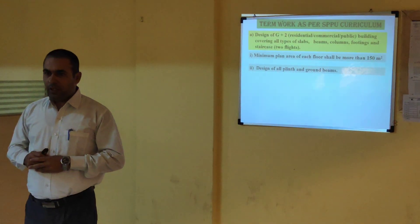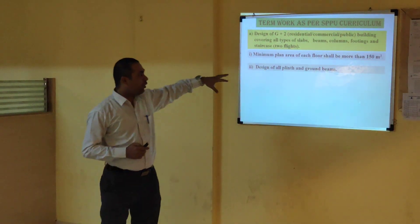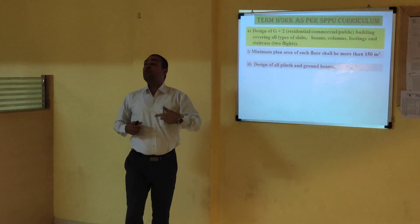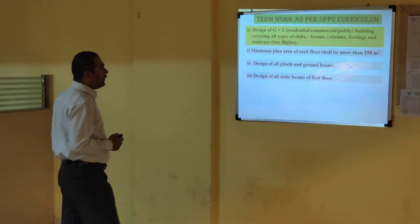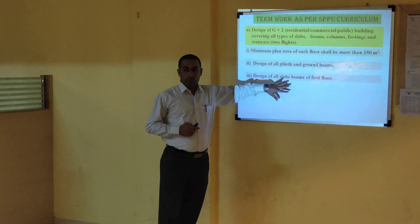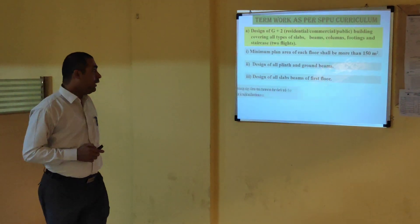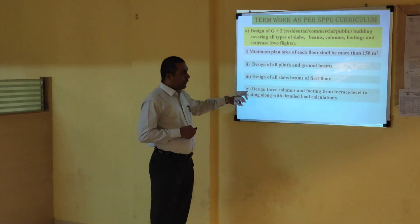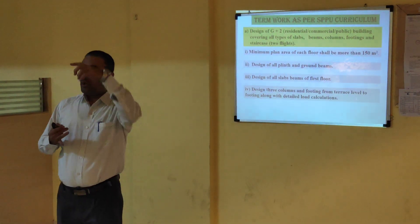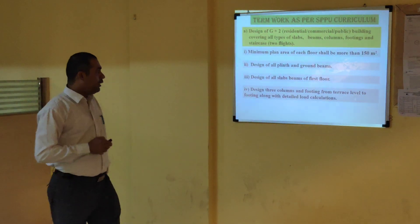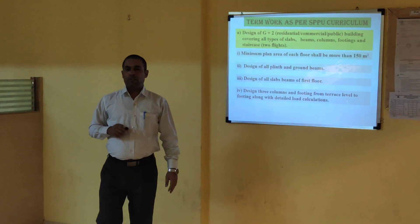All types of slab, all types of beam, all types of column, and footing need to be covered in the design. There should be design of all plinth beams and all floor-level beams. Columns include axially loaded columns where the load is uniform from all four sides. The design flows from top to bottom — from terrace level to footing level.